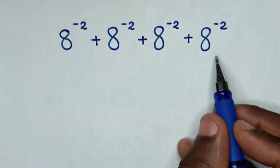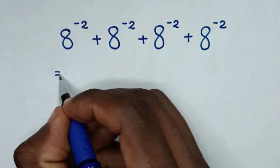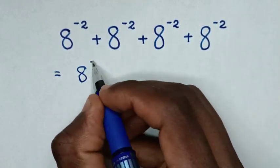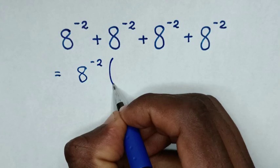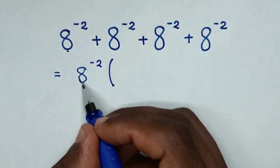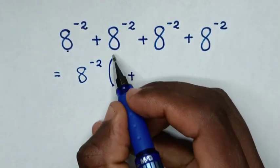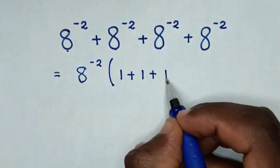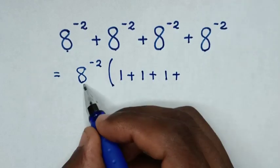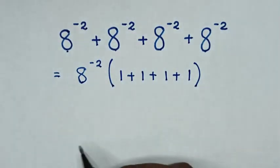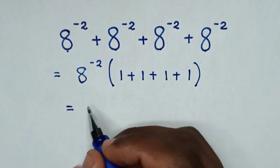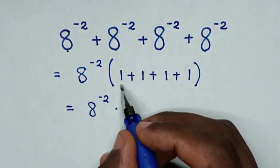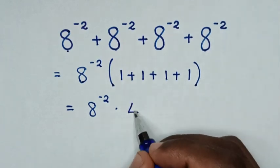So, the sum of these exponents is equal to — since 8 power of negative 2 is common, we take 8 power of negative 2 out of the bracket. Then, this divided by this is 1, plus this divided by this is 1, plus this divided by this is 1. So it equals 8 power of negative 2 times 1 plus 1 plus 1 plus 1, which is 4.